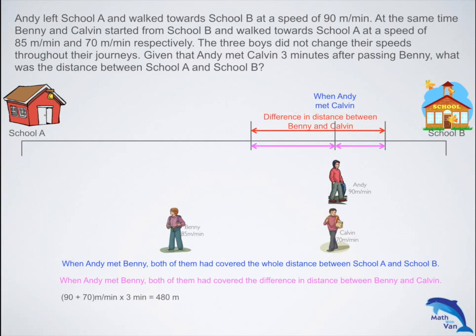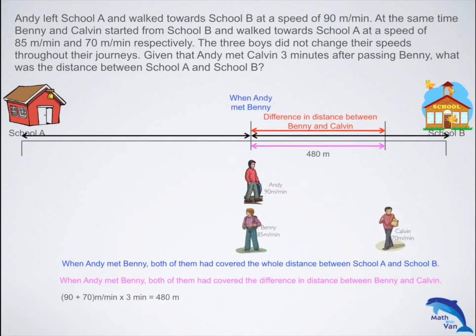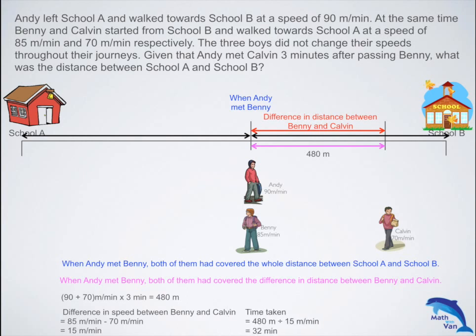So right now we know that when Andy met Benny, Benny was 480 meters ahead of Calvin. Let's go back in time to when this happened. This is the stage where Benny was 480 meters ahead of Calvin. They started at the same time, the same place, towards the same direction. The difference in speed between Benny and Calvin was 15 meters per minute, meaning every one minute Benny would be 15 meters ahead of Calvin. So how long would it take for Benny to be 480 meters ahead of Calvin? You take 480 divided by 15 and that gives you 32.